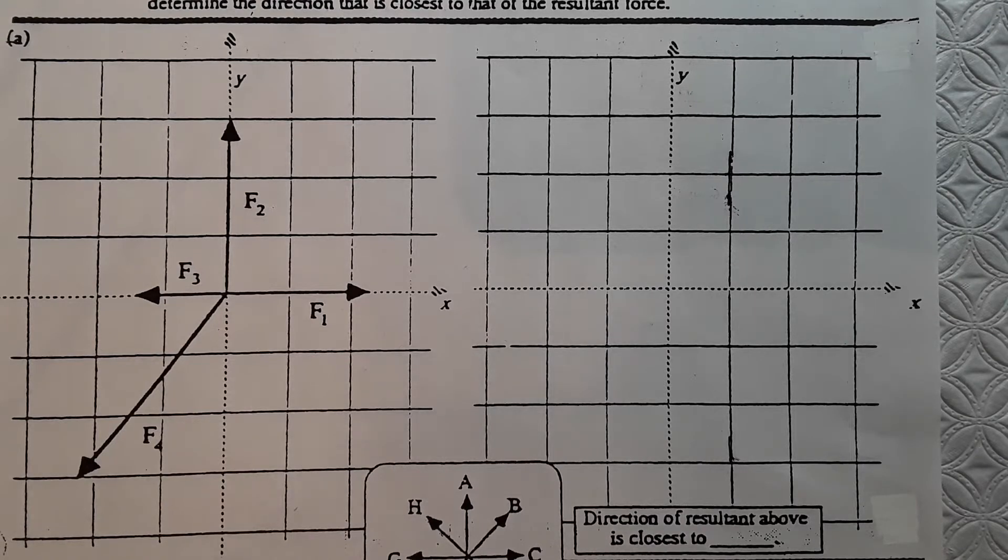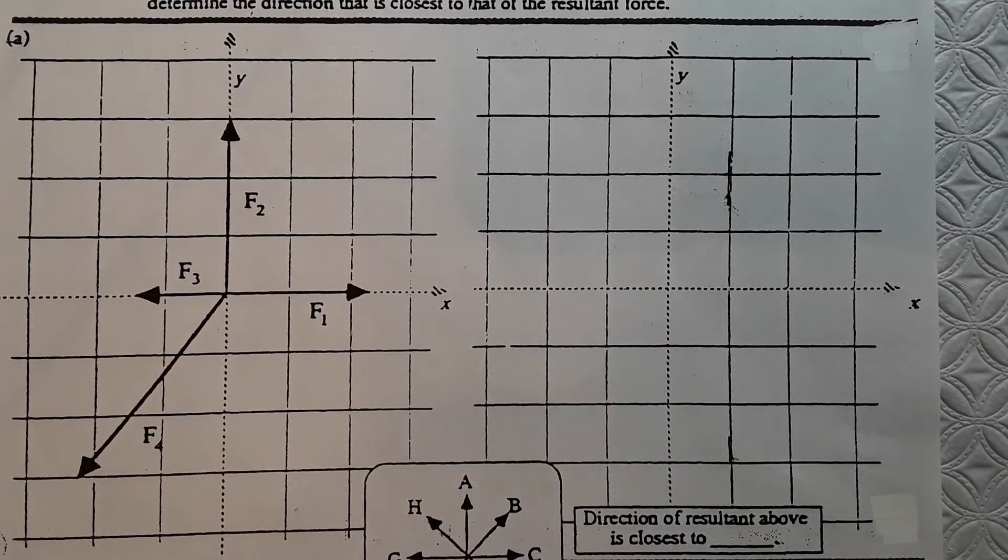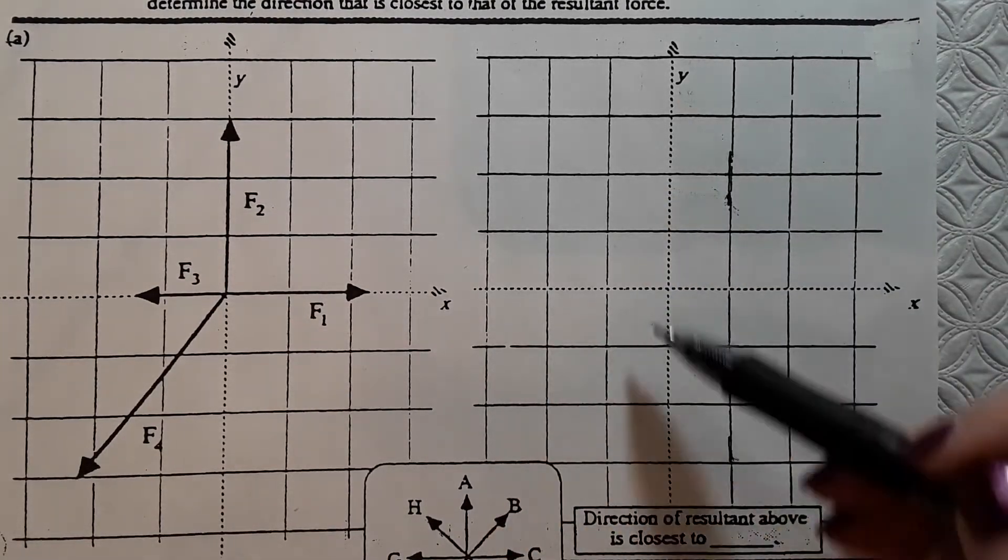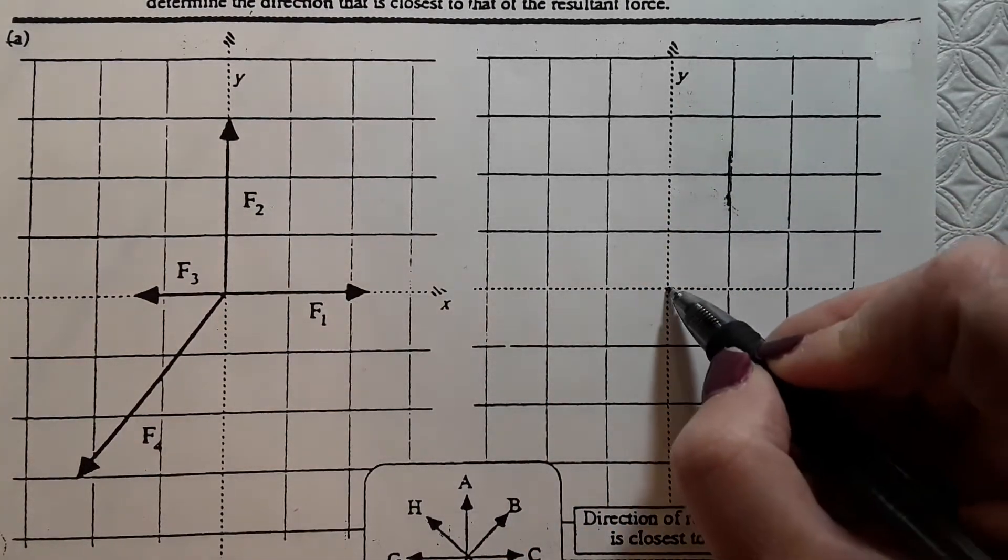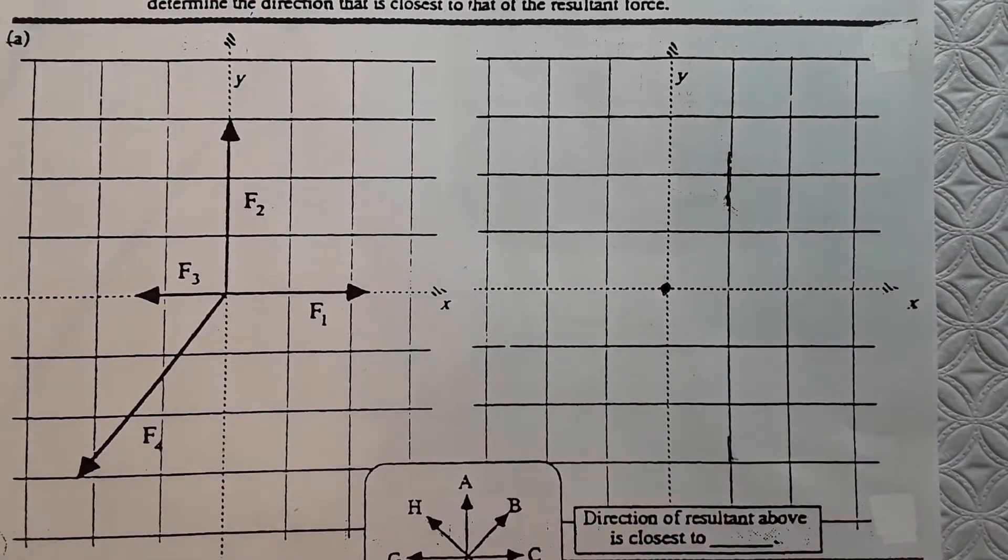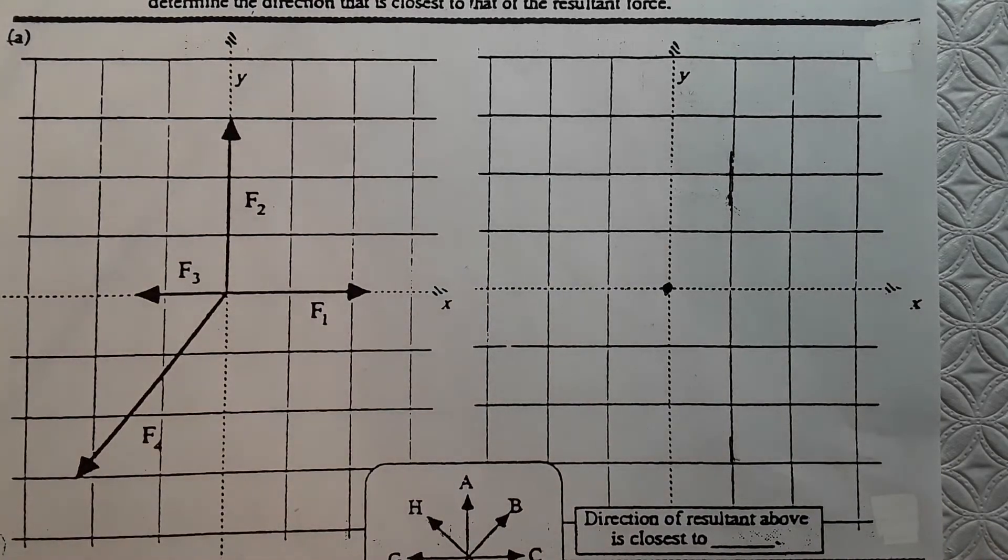So, we're going to redraw the vectors on this blank graph, tip to tail, and then draw the resultant. Now, a good way to start is to, on your axis, and you'll notice you do have an X and Y axis set, draw a dot for your starting position. This is where one free end will be for the resultant.